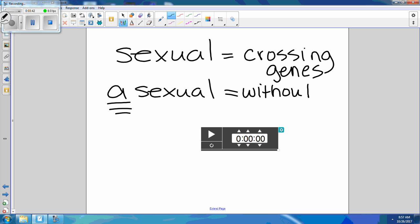So A means without, against, or without. We're against crossing of genes, or without crossing of genes. You're not crossing genes. So if you're not crossing genes, where do you get your genes from? Only one parent. So asexual reproduction involves one parent because we don't cross genes.